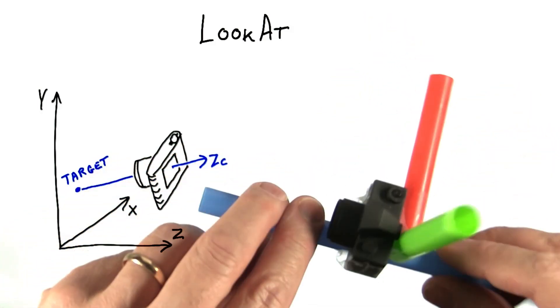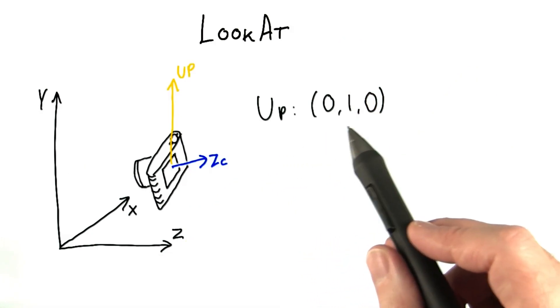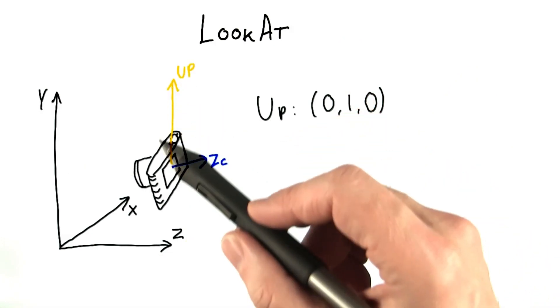So what we do is we also define an up vector of some sort. This vector gives us some guidance as to which way to orient the top of the camera. Typically in 3JS, we'll pass in a vector such as 0, 1, 0, the plus y axis as the up vector.